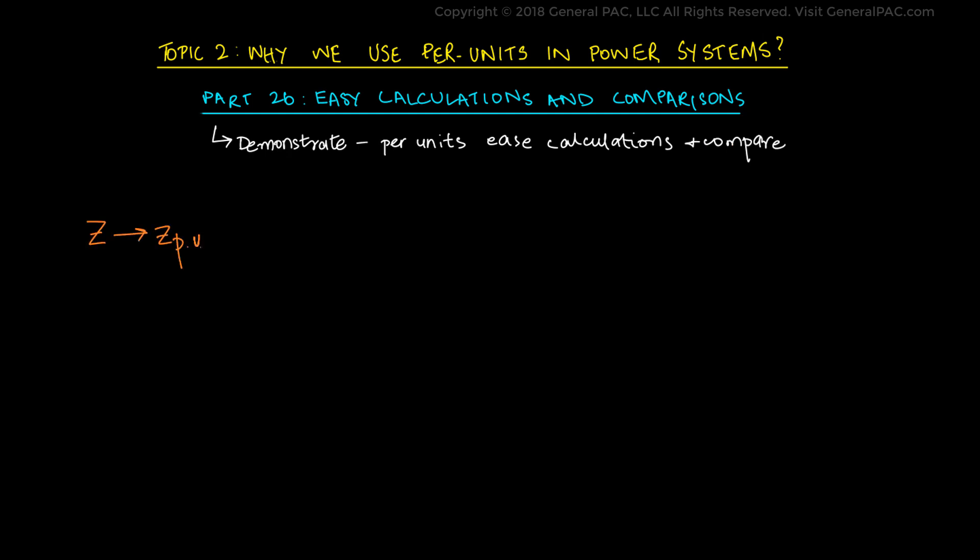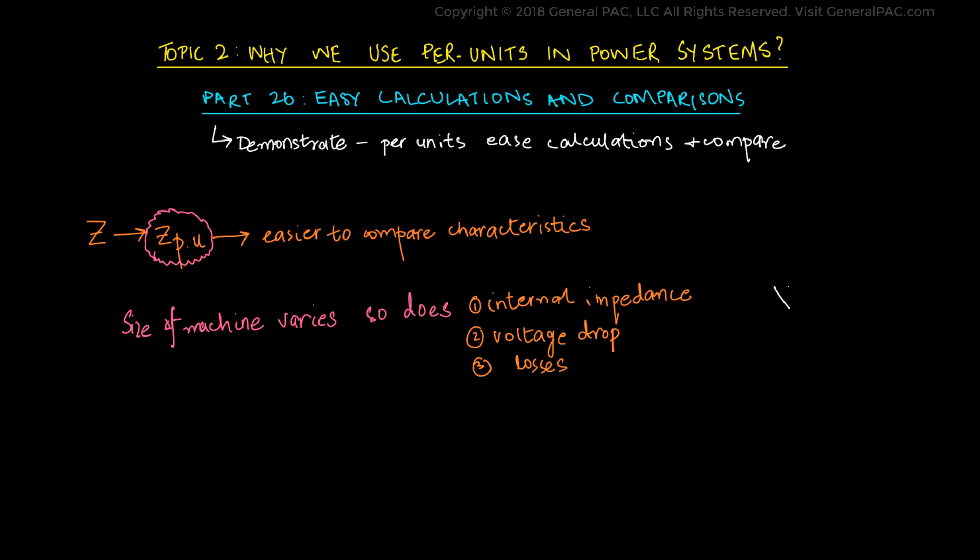By expressing the impedance of different electrical equipment in per units, it is easier to compare their characteristics. We are specifically talking about comparing impedances in per units because the size of electrical machines varies and its internal impedance, voltage drop, and losses also vary. For example, a primary circuit reactance of 0.1 ohms would be much higher for one transformer and much lower for another transformer. The driver for this is the voltage, power, and various other ratings of the two transformers.